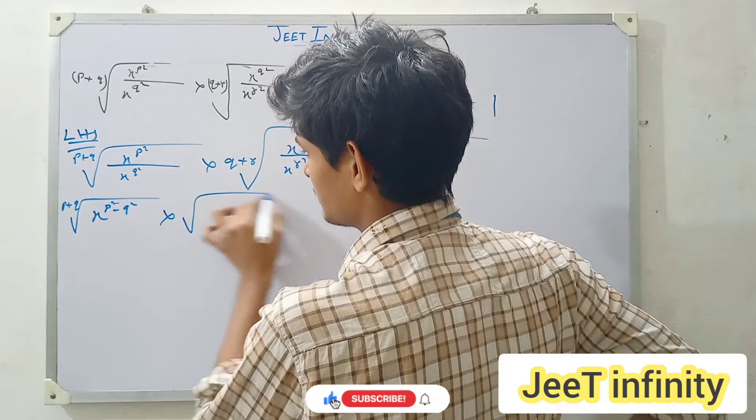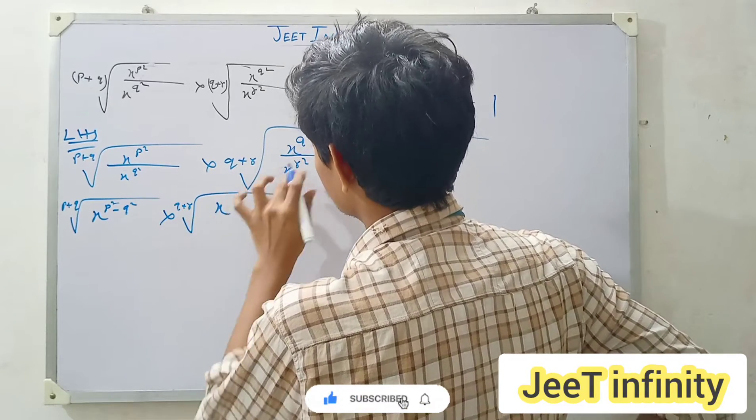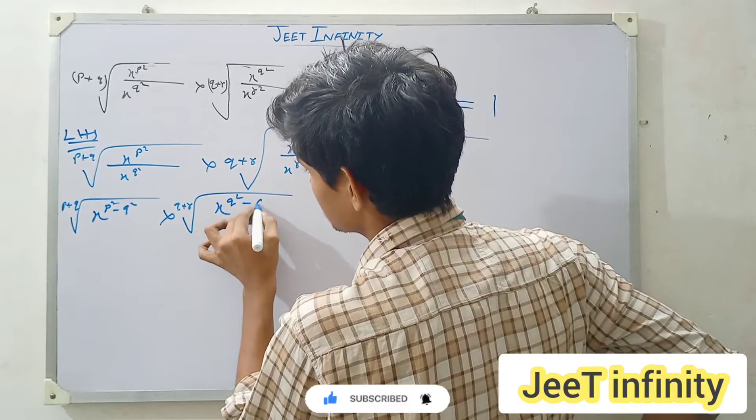And here we will write root over (q plus r). So x to the power q over x to the power r. This equals q squared minus r squared.